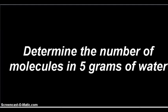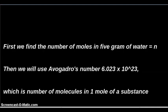Number of molecules in given mass of water. Two-step process: first find the number of moles and then multiply the same by Avogadro's number. So we find the number of moles by dividing the total mass by molar mass of water.